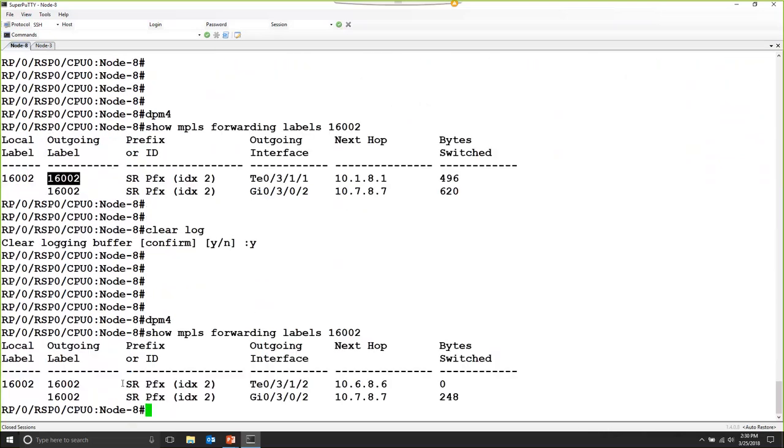We take a look at the LFIB entry. Now we see that the first IGP path is going down on interface 10 gigi 0 3 1 2 instead of interface 10 gigi 0 3 1 1. Okay, so the corruption is running.